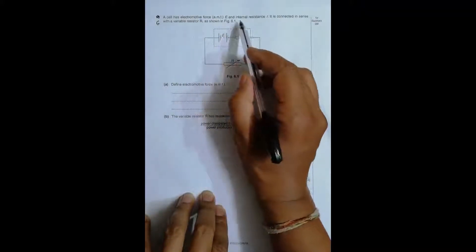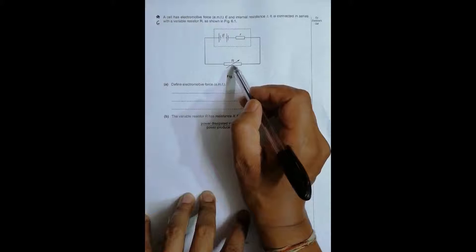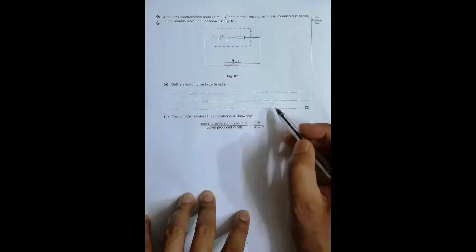It shows a cell has electromotive force EMF E and internal resistance small r. It is connected in series with a variable resistor R, external resistance as shown in figure 6.1.